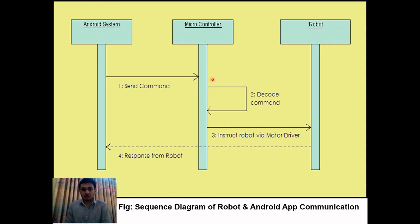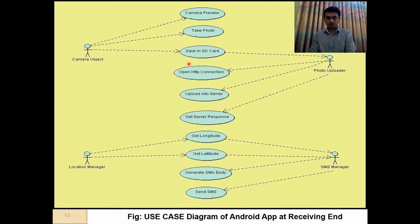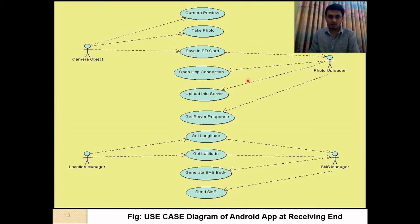This is the sequence diagram. The microcontroller decodes the command sent from the Android system and instructs the robot via a motor driver to run the robot. This diagram shows the receiving Android app. Four objects are here: the camera object opens the camera preview, takes a photo, and saves it to the SD card. The photo uploader then opens an HTTP connection and uploads it to the server. The location manager gets longitude and latitude, which the SMS manager uses to generate an SMS body and send it to the transmitter.